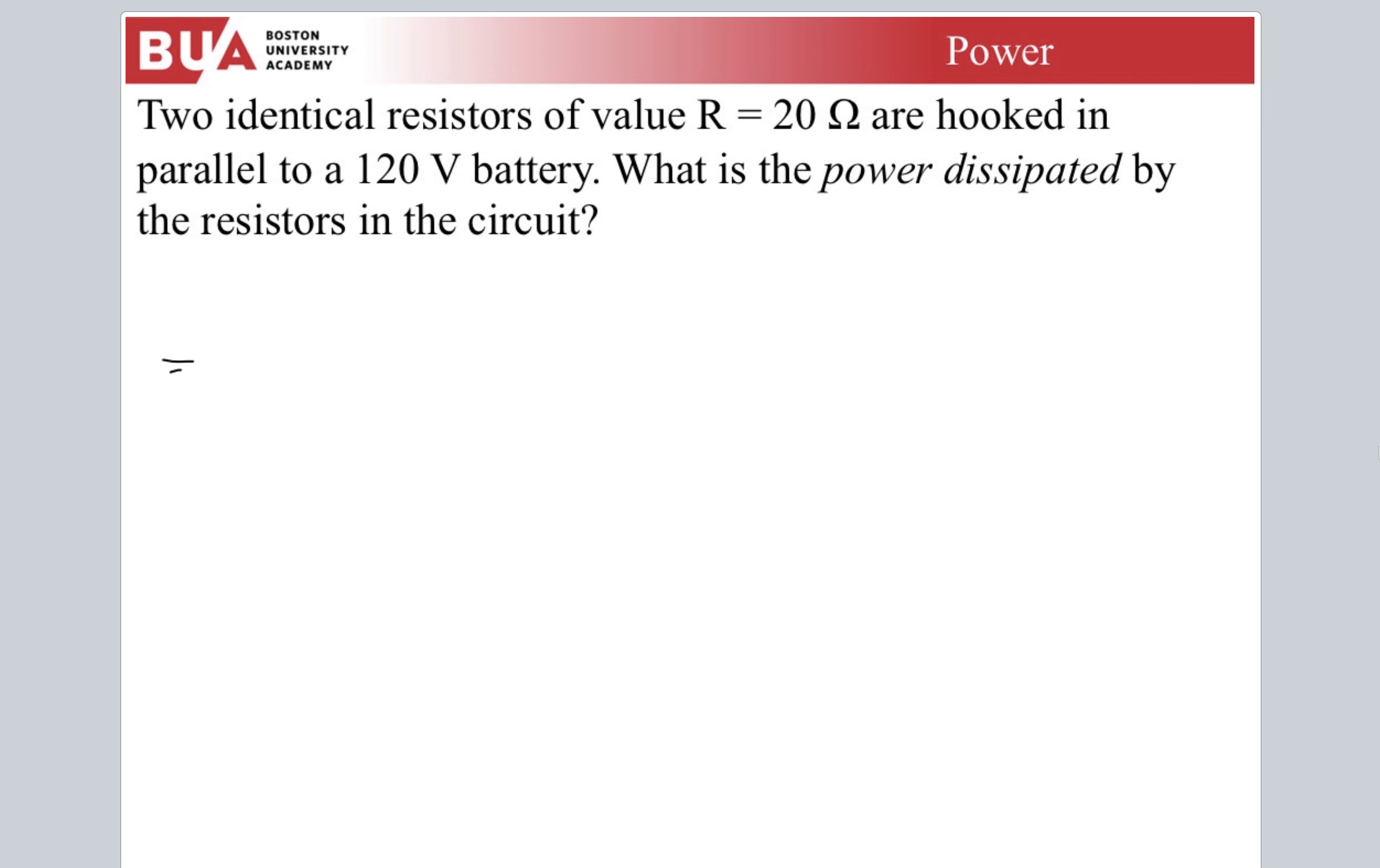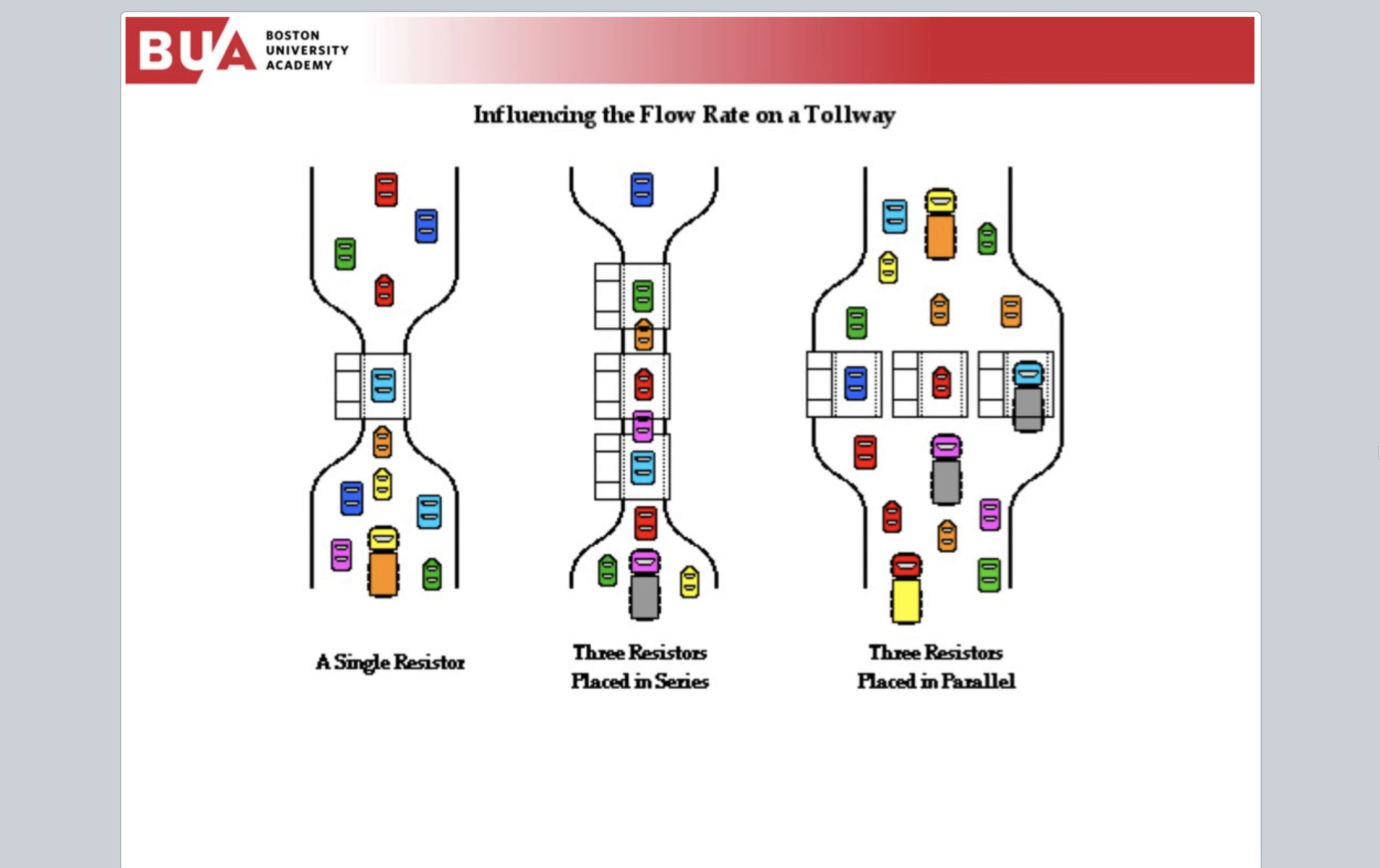120, 20, 20. Let's do an equivalent circuit. R equivalent, we have 1 over 20 plus 1 over 20, 2 over 20 equals 1 tenth. That means R equivalent is 10 ohms. Hooking two identical resistors up in parallel just reduces the resistance by half. Which makes a lot of sense if we think back to this analogy. Adding another resistor just doubles the flow.